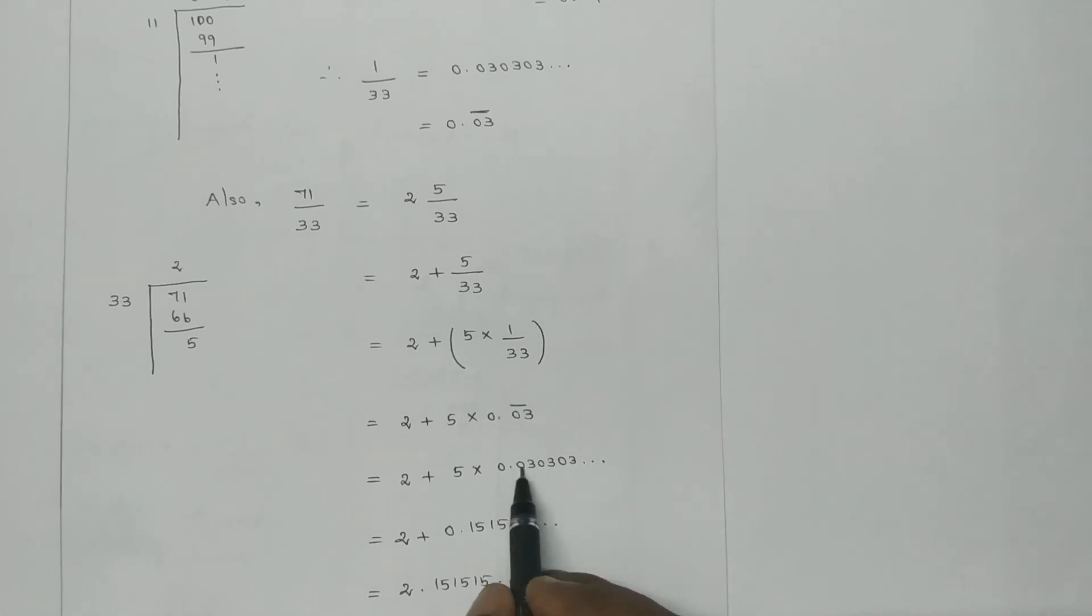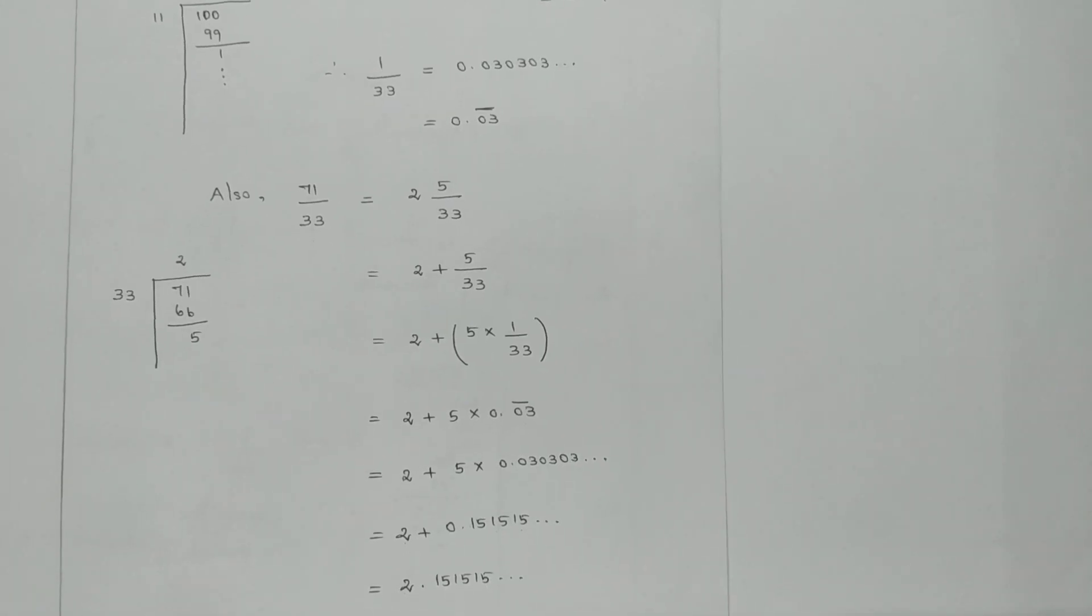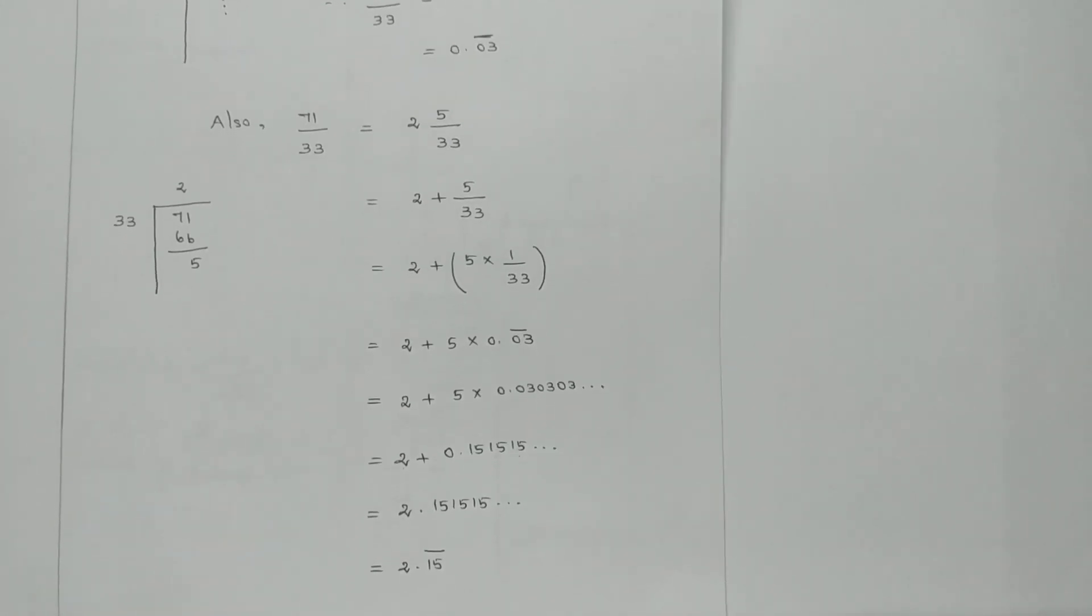5 times 3 is 15. That gives us 0.1515 repeating. So we get 0.151515... Then we add 2. So 2 is the whole number part. This gives us 0.151515 repeating. Now the 2 will also join and add.